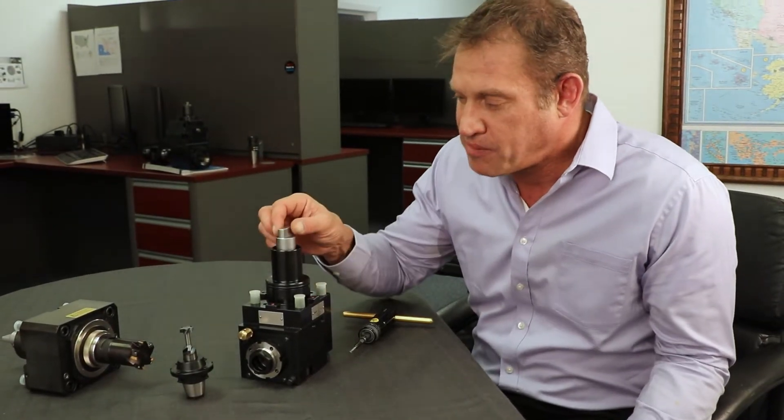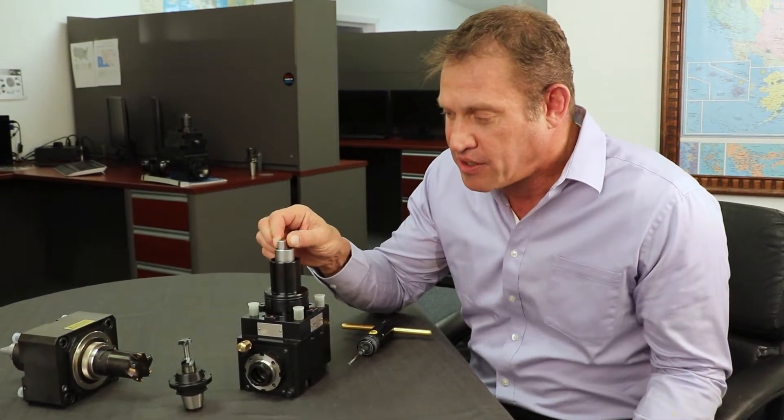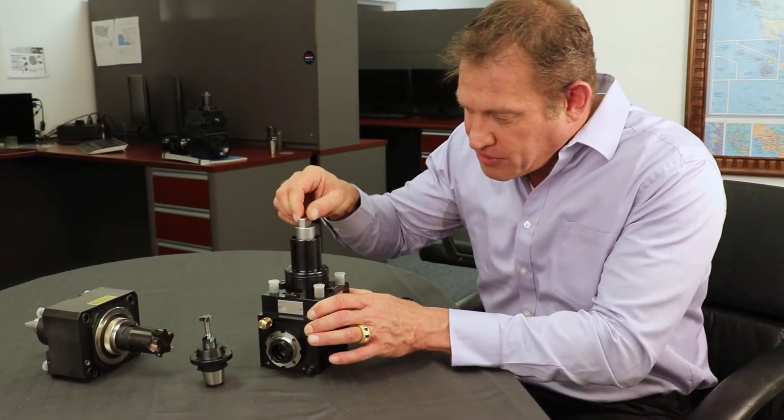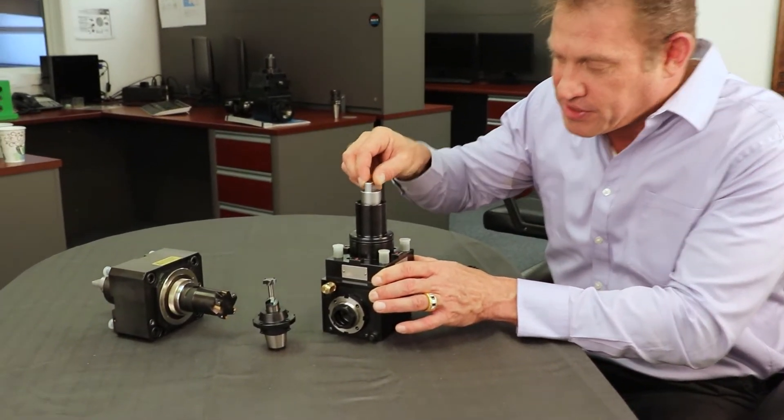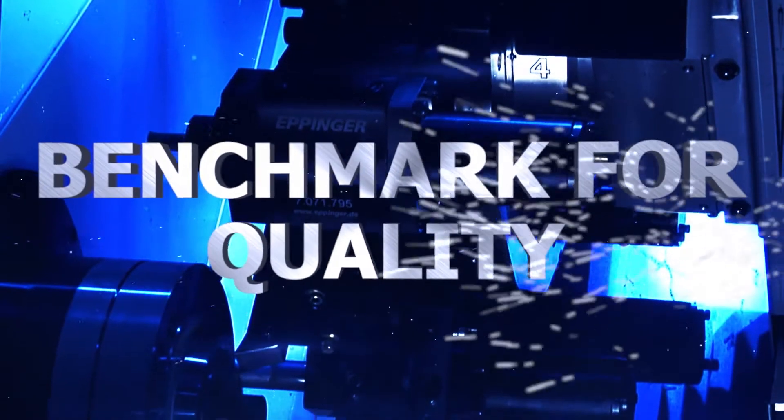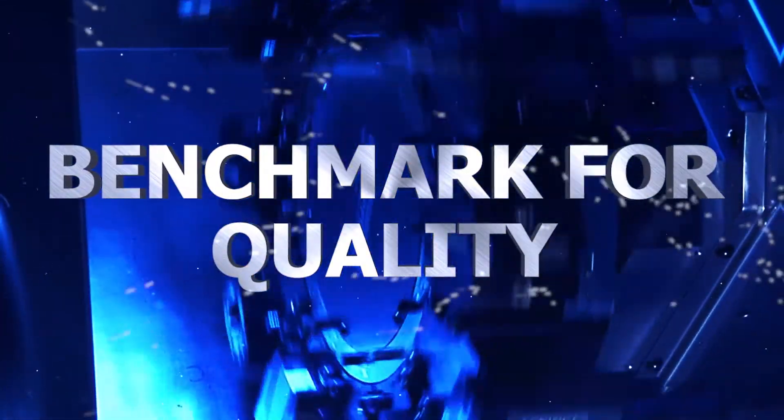To combat this, Eppinger developed the compensating clutch, also known as the wiggling clutch, because it is able to wobble in various directions. This compensates for differences between the turret drive motor and the back of the tool holder.